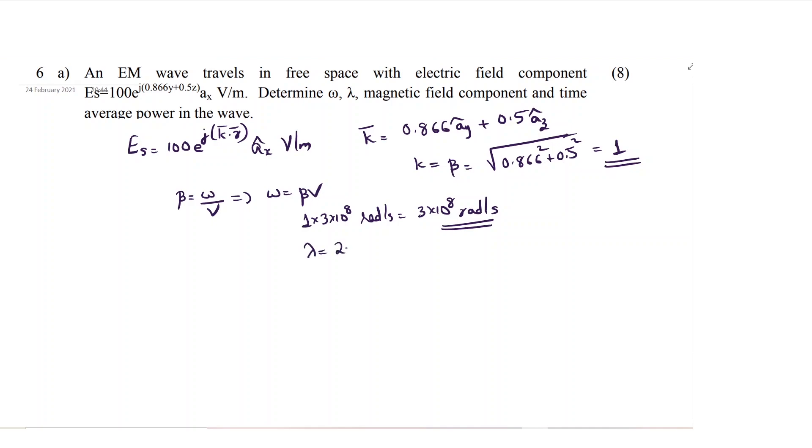Next, lambda. You know that 2 pi by lambda is beta. So lambda is 2 pi by beta. Again, beta value is 1, so it will be 2 pi. That is 2 into 3.14, 6.28 meter. First two values you got.